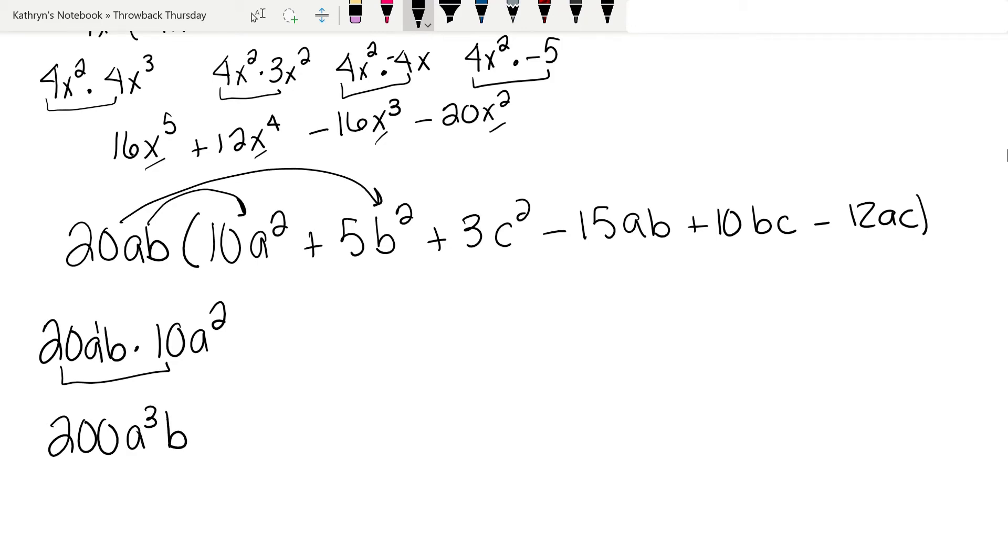20 times 5b², so 20ab times 5b². 20 times 5 is 100, positive 100. Just an a, but now I have three b's, ab³.